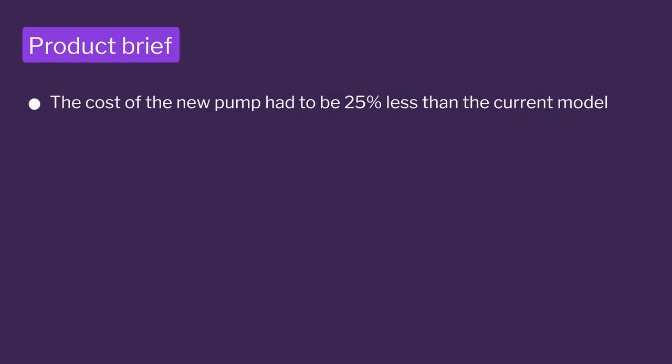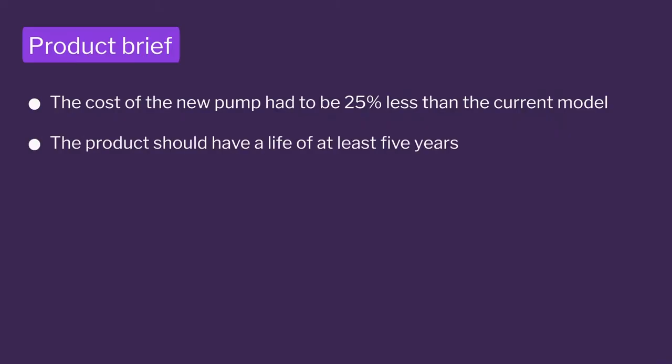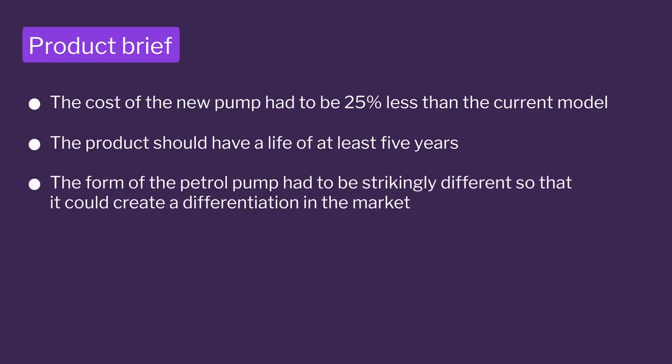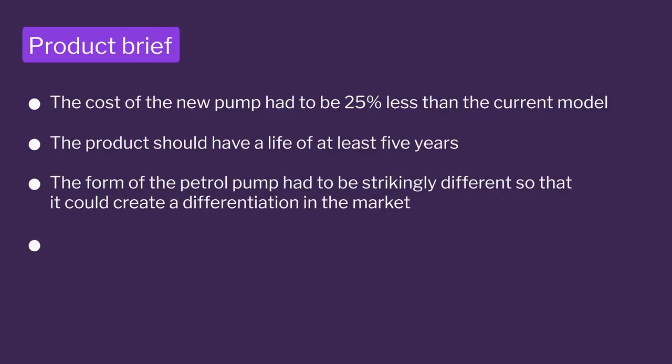The product should last at least 5 to 6 years in the market as a champion product. The form and aesthetics had to be strikingly different and new in the field, because they were already out of business and competitors already had great products. And they said don't change the hydraulics, because hydraulics is already ready — if you change that, it will take a longer time cycle and your product life cycle will go up.